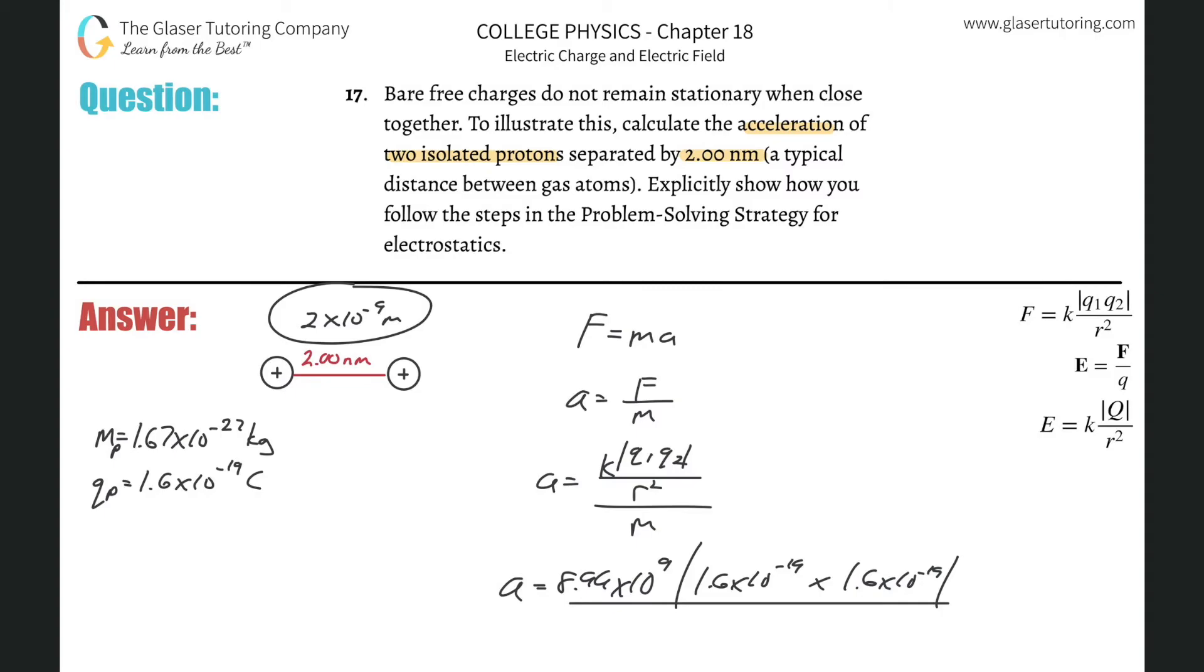Simple conversion, check out number 10. So this is going to be two times 10 to the minus nine, please square it. Don't forget that. And then that whole numerator thing, it's a complex fraction divided by the mass, which is 1.67 times 10 to the minus 27 kilograms for a proton.